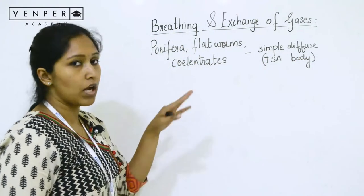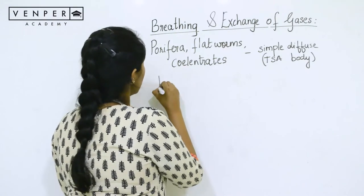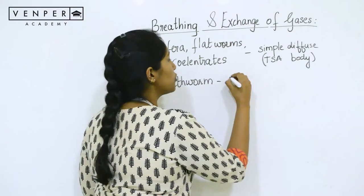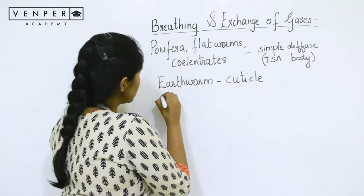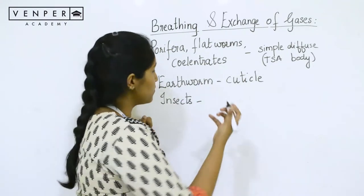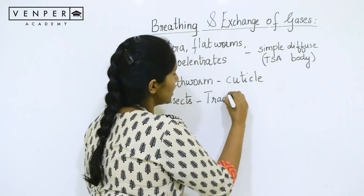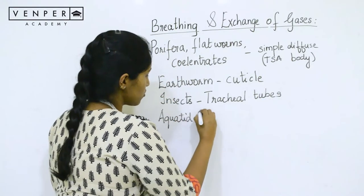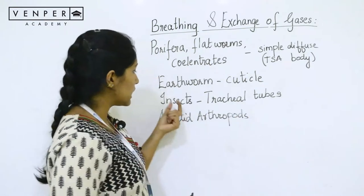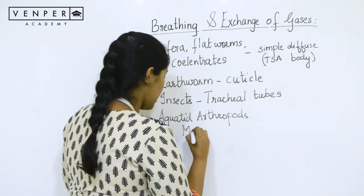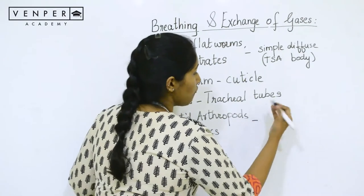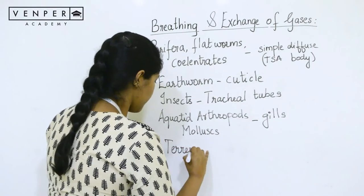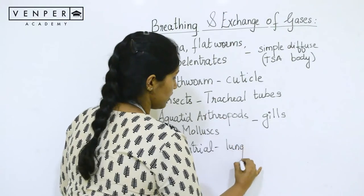When we consider slightly higher organisms like earthworms, they use the moist skin or cuticle. When we consider insects, they have a network of tubes called tracheal tubes. Aquatic arthropods and mollusks use vascularized structures called gills. And once you come to the terrestrial forms, they use lungs.